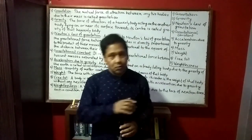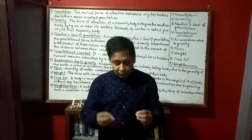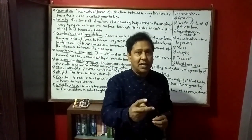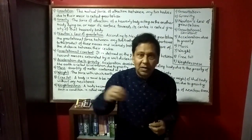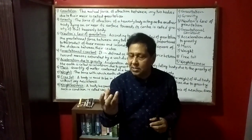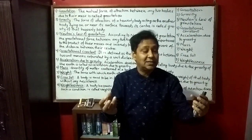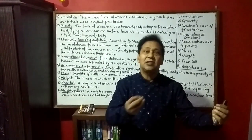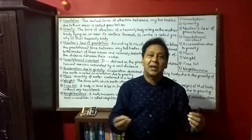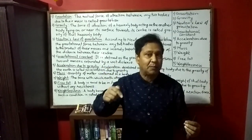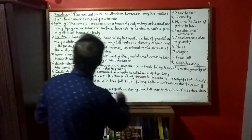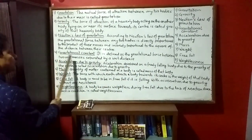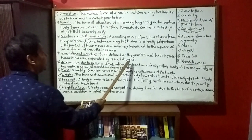Now let's move to gravitational constant. What is it? Gravitational constant is defined as the gravitational force between two unit masses separated by a unit distance. Two unit masses means two 1 kg masses. If they are separated by a distance of 1 meter, then the gravitational force between them is termed as the gravitational constant.